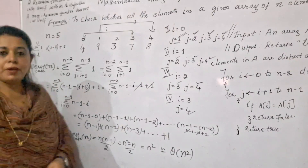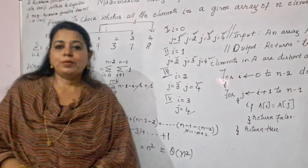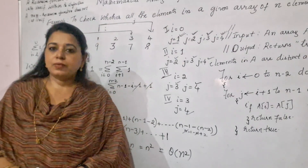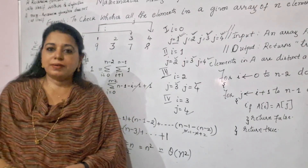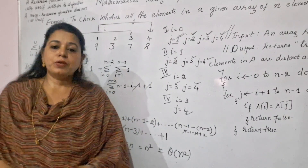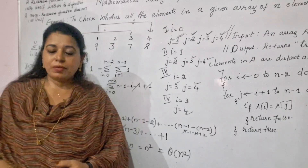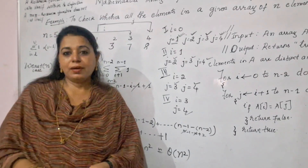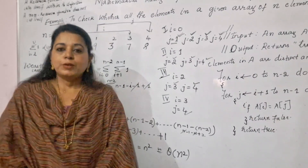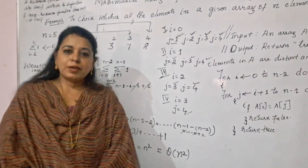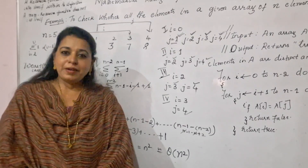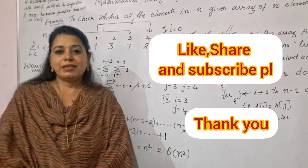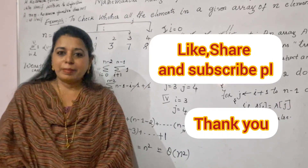This is how you carry out the analysis of a non-recursive algorithm. We have completed the analysis for the problem of determining whether elements in an array are unique or not. The time efficiency is Θ(n²). Hope you find this session useful — please like, share, and subscribe to the channel. Thank you, bye-bye and take care.